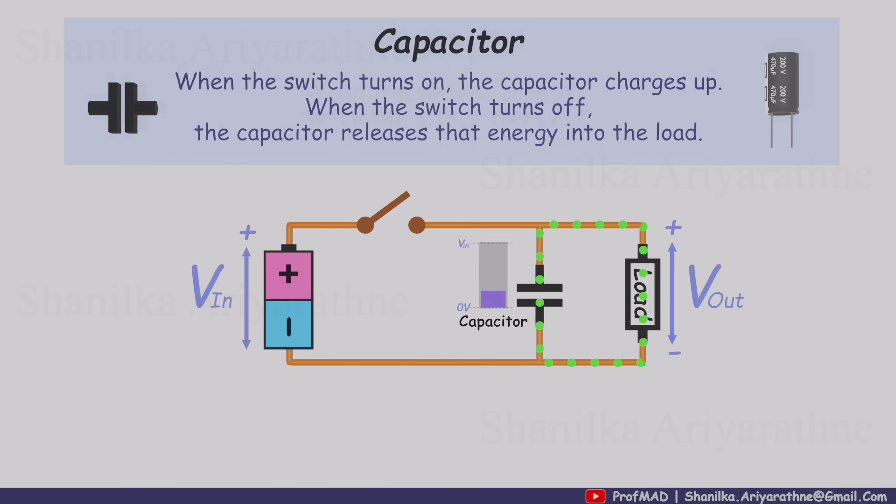When the switch turns off, the capacitor begins to discharge through the load, releasing its stored energy more slowly. That slow release helps keep current flowing for a short time, thanks to the load's resistance.